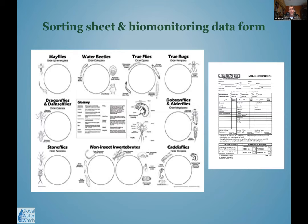We typically use a sorting sheet. As we identify things in our tub from the collected sample, we pick them out with a pipette, spoon, or forceps and place them into petri dishes of water on a sheet with different categories. We aim to accumulate ideally a hundred different organisms for a representative sample, sorting them into categories that will ultimately transfer to our data sheet.